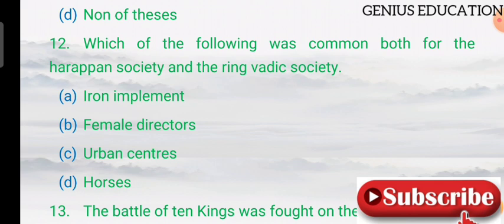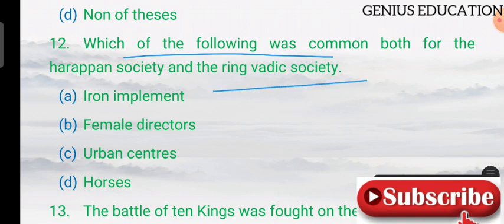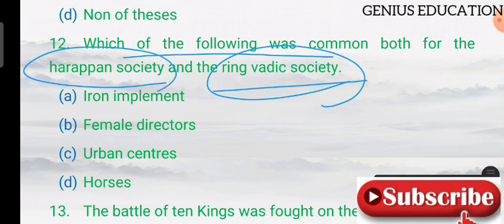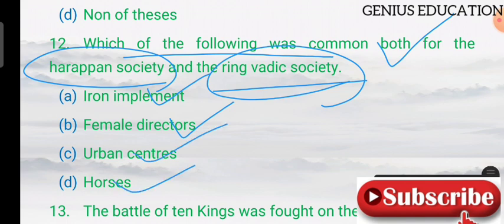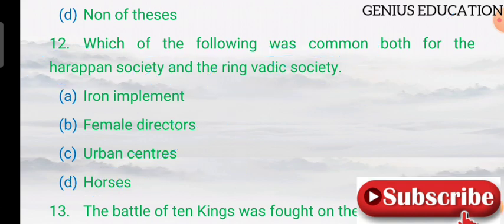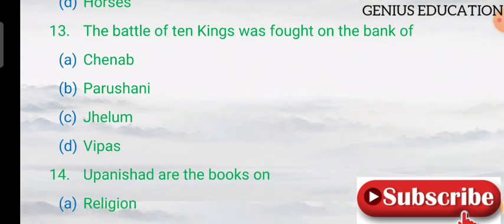Question 12: which of the following was common to both the Harappan society and the Rig Vedic society? Options include iron implements, female deity worship, one administrative center, and horses. The answer is horses — horses were a common feature of both societies.